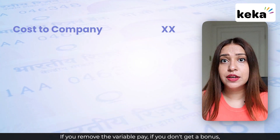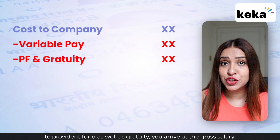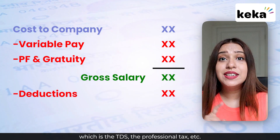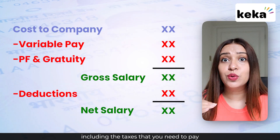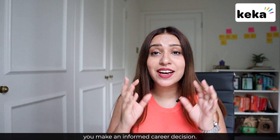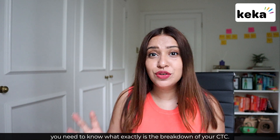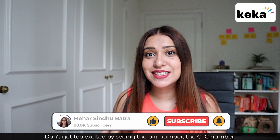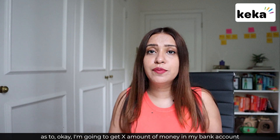So to summarize: you start with cost to the company. Remove variable pay and the employer's contribution to provident fund and gratuity, and you arrive at gross salary. Remove all deductions — TDS, professional tax, etc. — and you arrive at net salary, which is what actually comes into your bank account. Understanding your compensation package helps you make an informed career decision. Go through your job offer in detail before signing — know the breakdown of your CTC, where your money is going, and how much you'll actually receive. Don't get too excited by the big CTC number; be realistic about your in-hand amount.